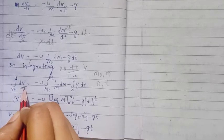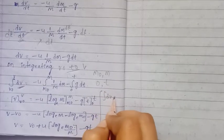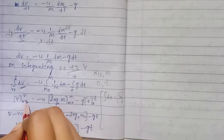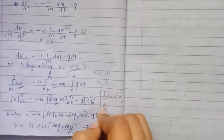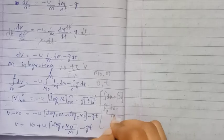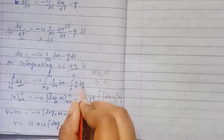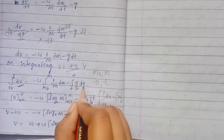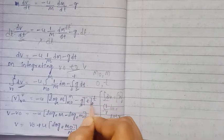Integration of dv gives v. Using the formula: integration of 1 by x times dx equals log x, integration of 1 by M dM gives log M. Since g is a constant, integration of g into dt gives g times t. Applying limits, dv integrated from V0 to V gives V minus V0.